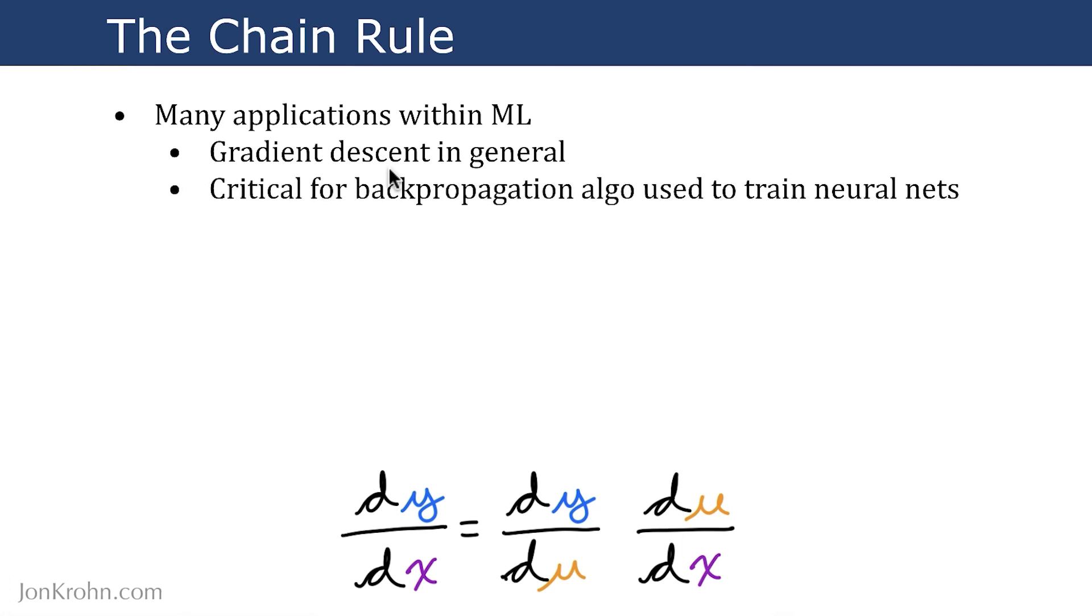And a specific application of the chain rule is the backpropagation algorithm, which is related to gradient descent, but it allows us to descend the gradient, to apply gradient descent in situations where we have a neural network.